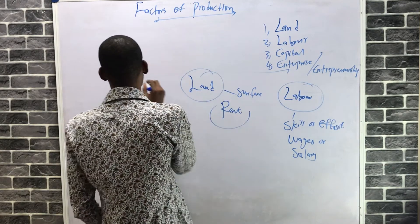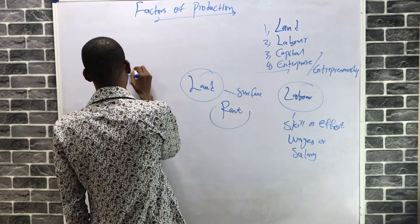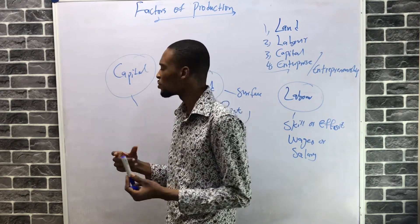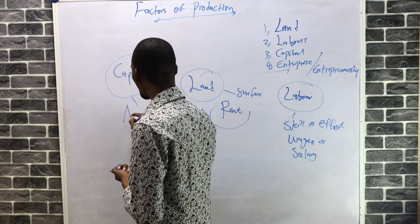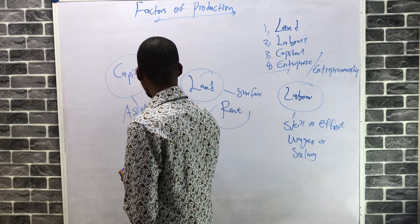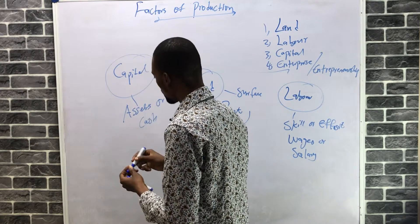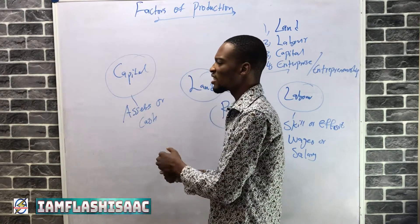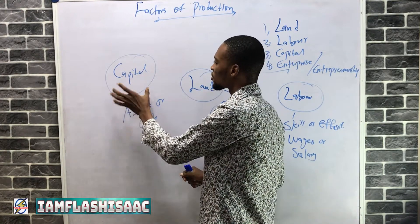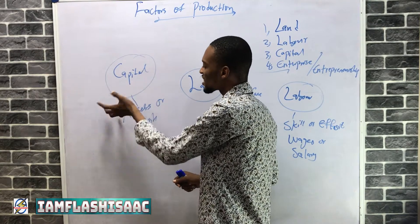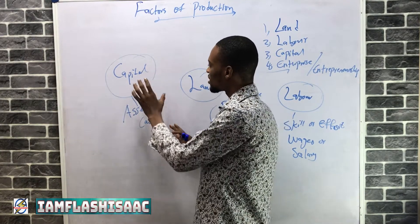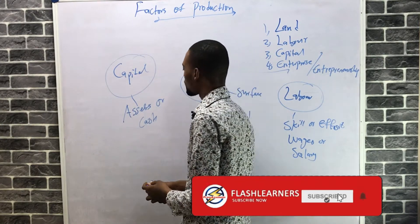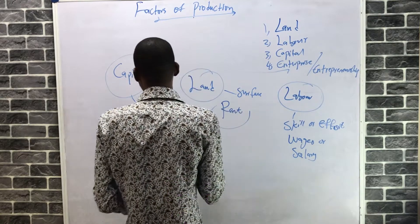The third factor is capital. Capital is man-made input in production — it includes funds, assets, or cash used in production. Money spent on production, machinery, tractors, cranes — any machine employed in production is under capital. Both physical assets and the money you pump into production are man-made inputs. The reward for capital is interest.